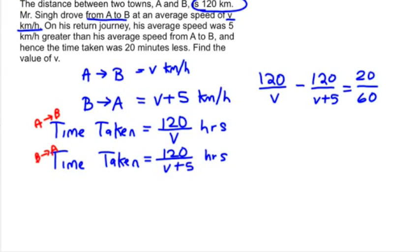So I know it's 20 over 60, one third of an hour, which I can go ahead and write down right now. So let me just rewrite that: 120/V minus 120/(V+5) equals one third.